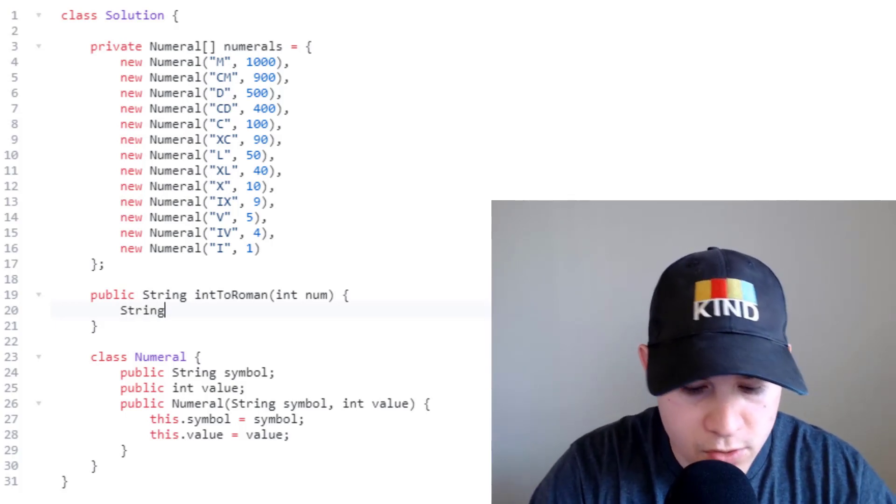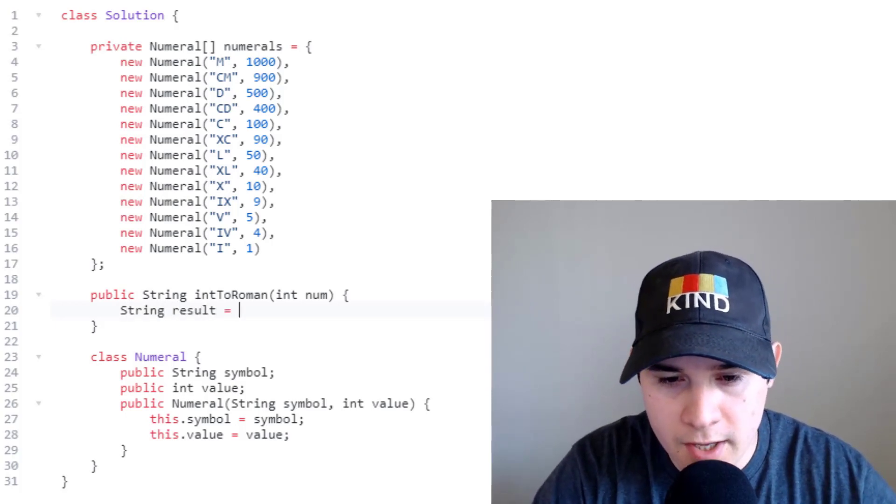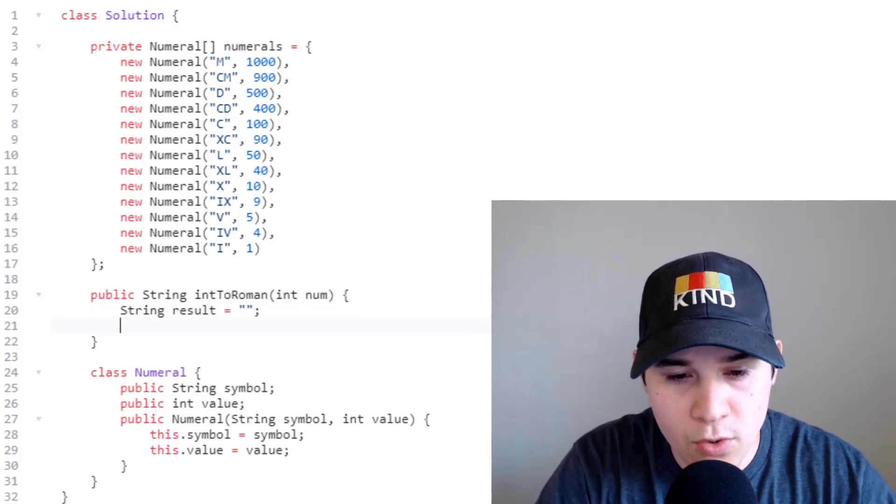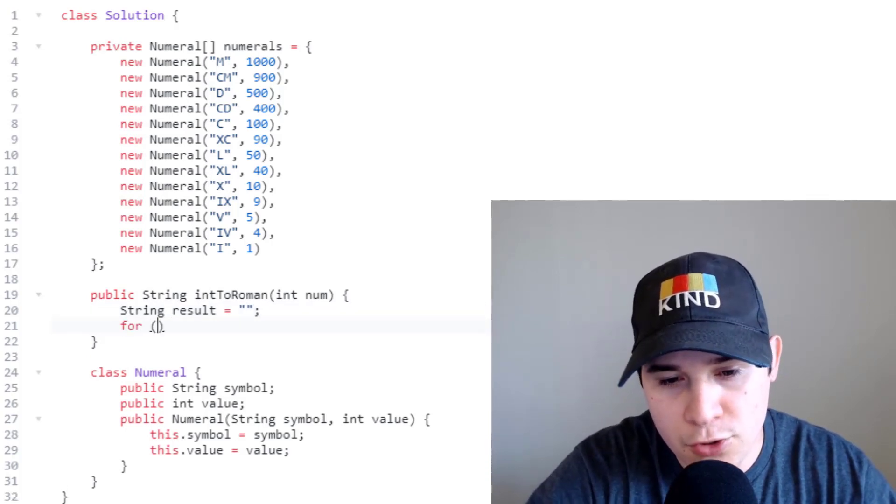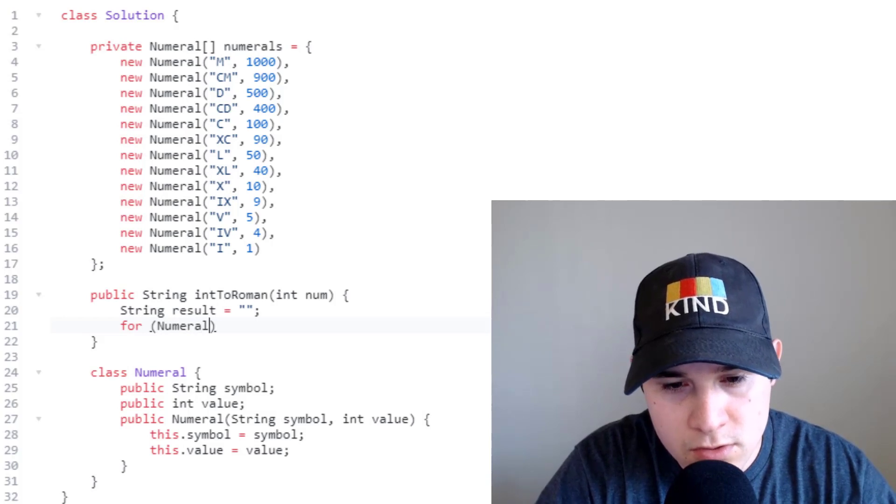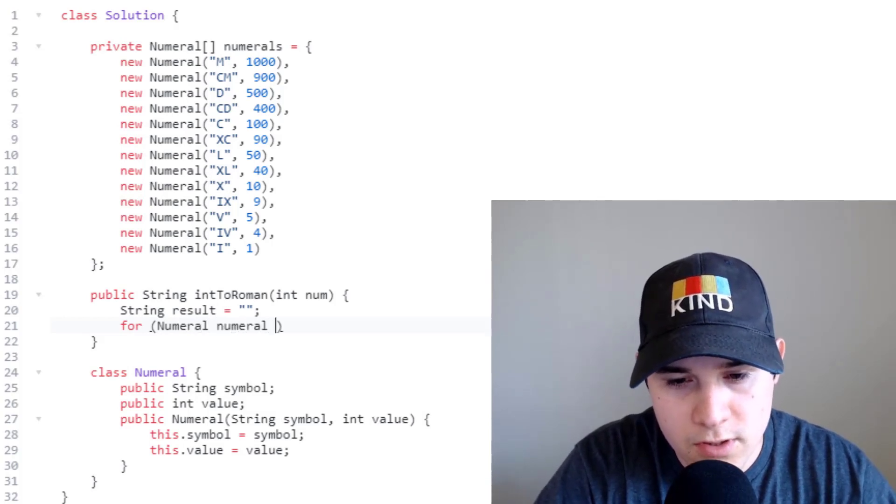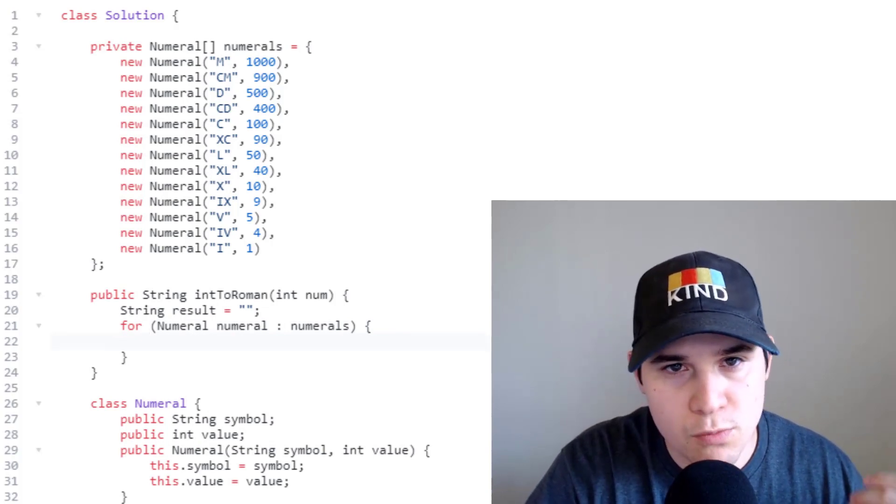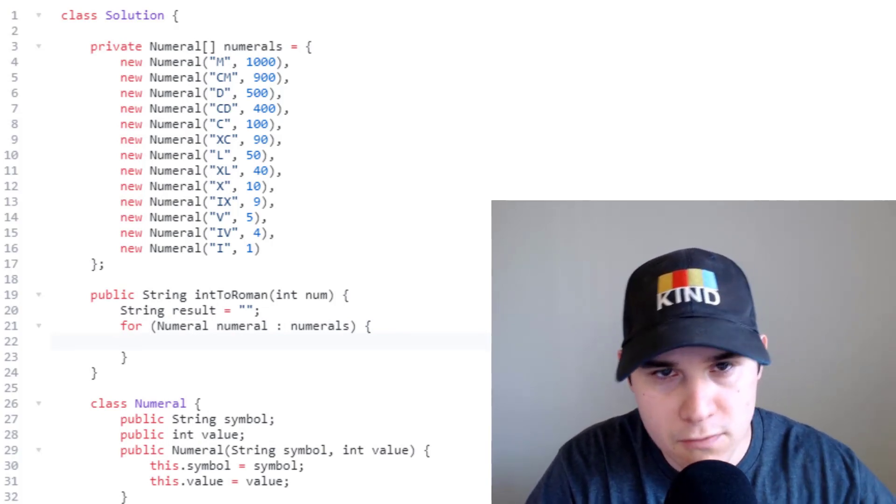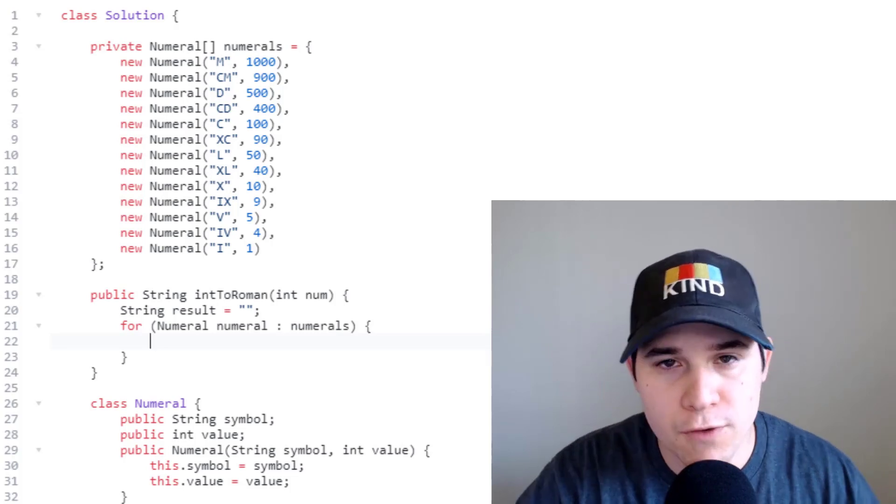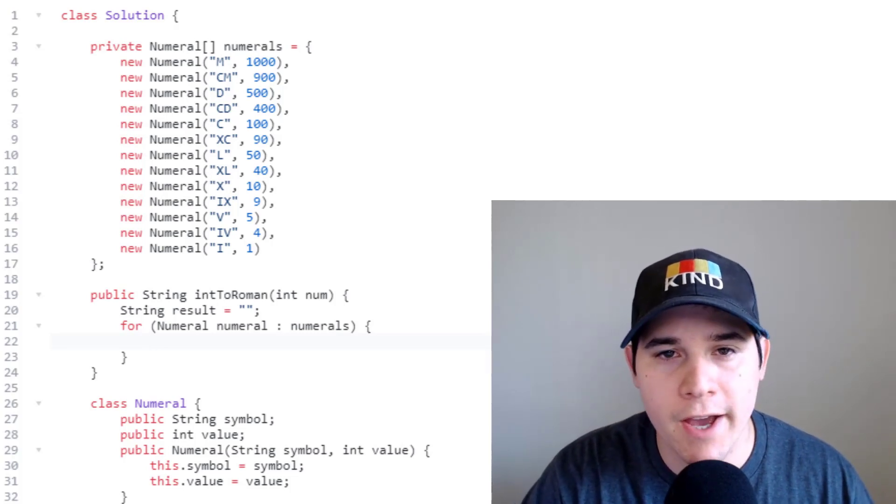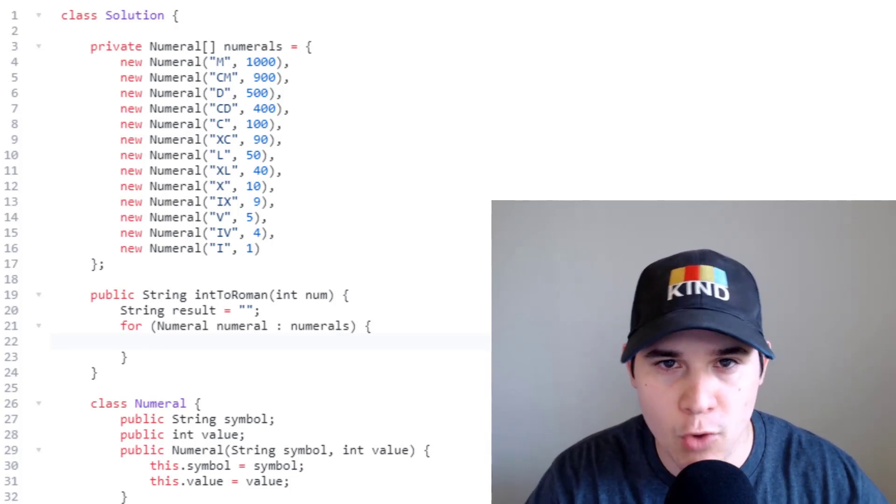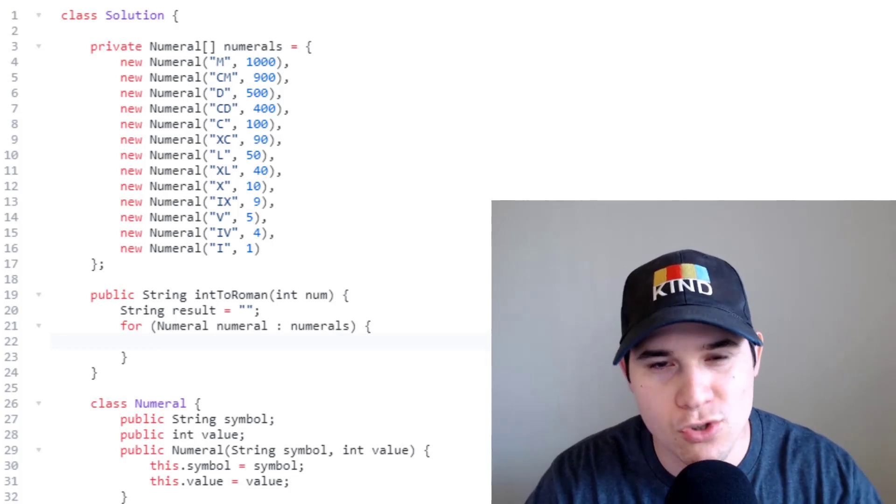The first thing we want to do is create a result and this can just be initialized to an empty string. Then we're going to loop over all of our numerals. Once we're in here this is where we need to perform the simple arithmetic, the division and the modulus. So first let's compute the division to find out how many of that specific roman numeral we need to add to our result. We'll say int numberOfSymbols and we're going to take our num and divide it by numeral.value.